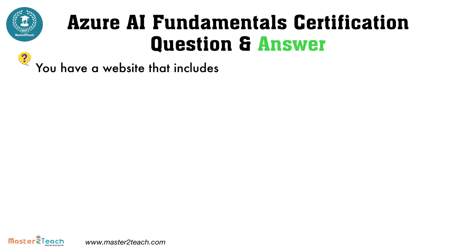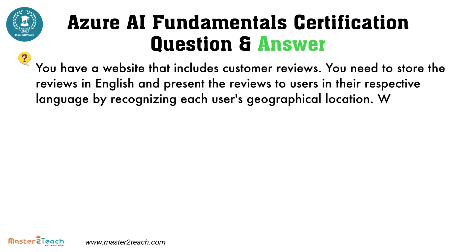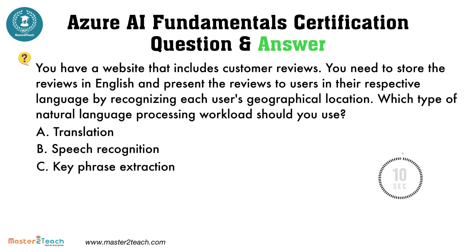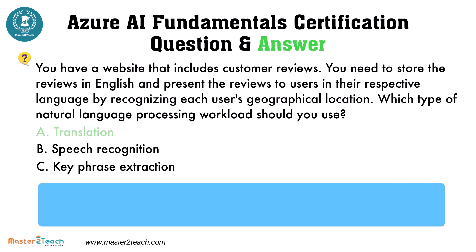You have a website that includes customer reviews. You need to store the reviews in English and present the reviews to users in their respective language by recognizing each user's geographical location. Which type of natural language processing workload should you use? The options are: A, translation; B, speech recognition; C, keyphrase extraction. The correct answer is translation. This will enable you to translate the reviews from English into the user's preferred language based on their geographical location.